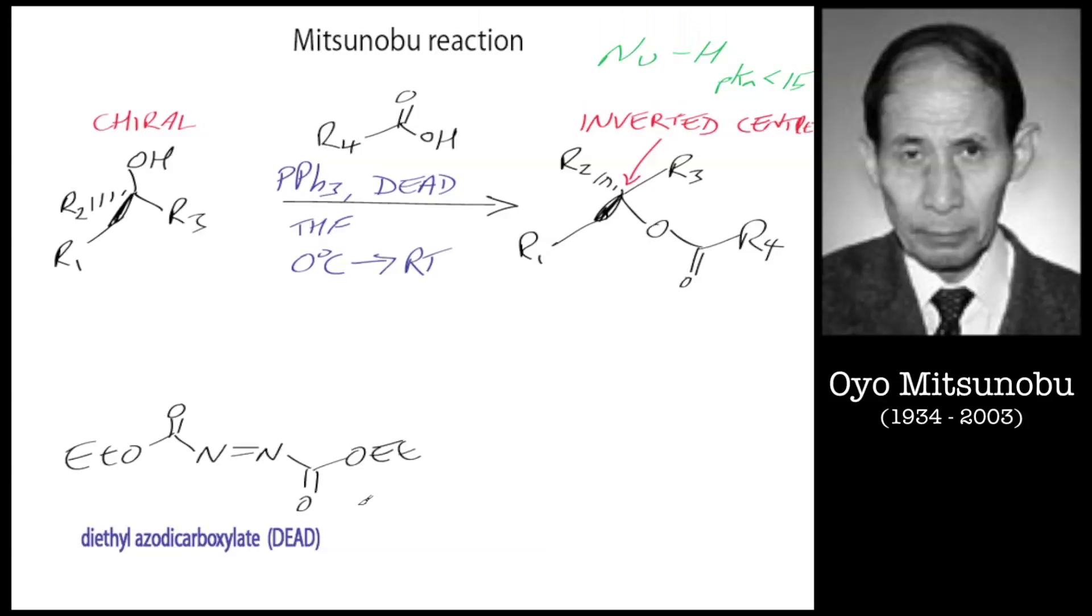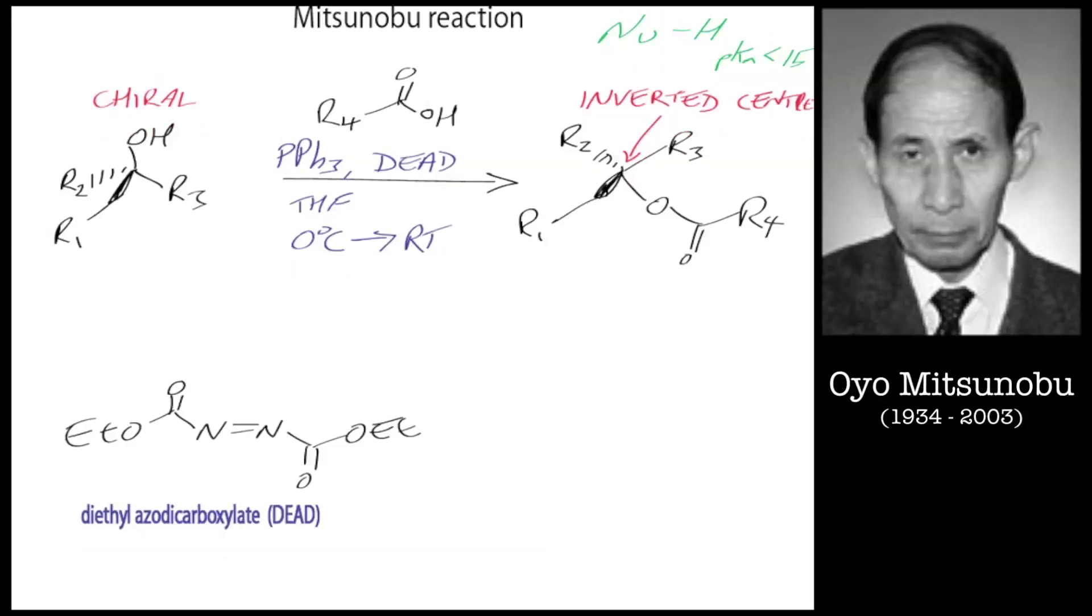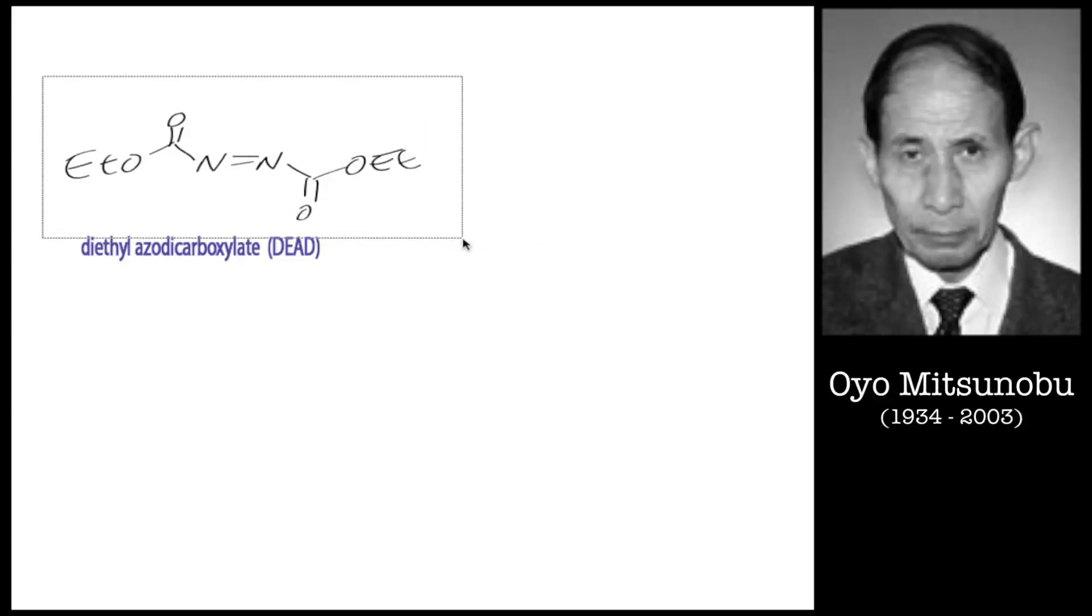This is diethylazodicarboxylate, also known as DEAD. There are variants like isopropyl and other diazo dicarboxylate species which have been modified to make the reaction proceed better. So we'll just slide down and get on with the mechanism. The first thing to do is attack the DEAD group. We take triphenylphosphine.